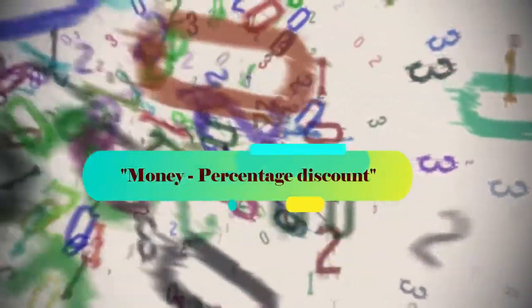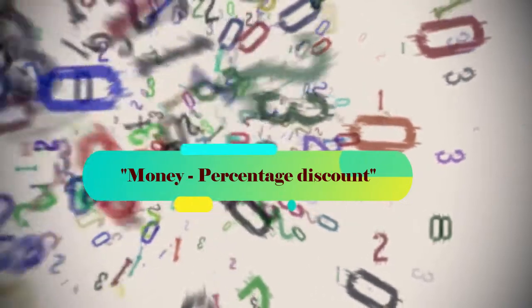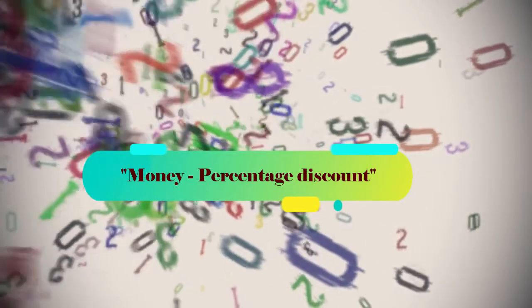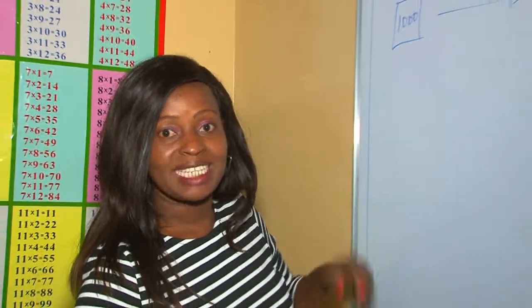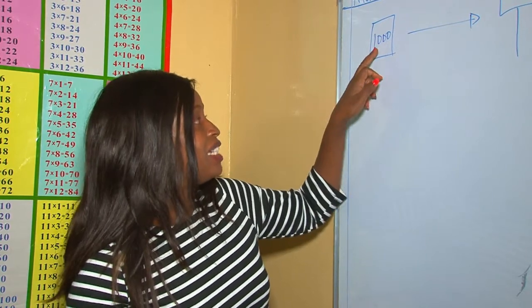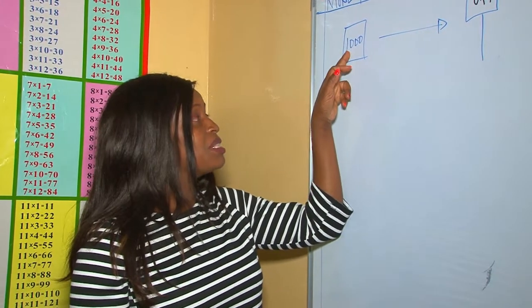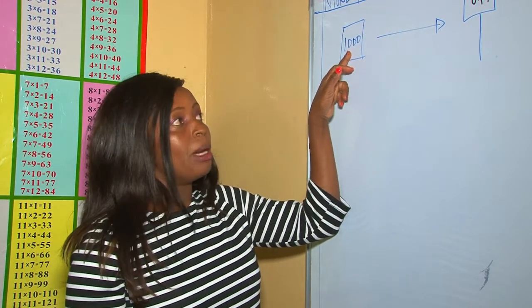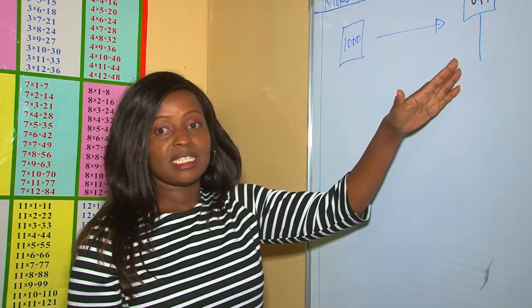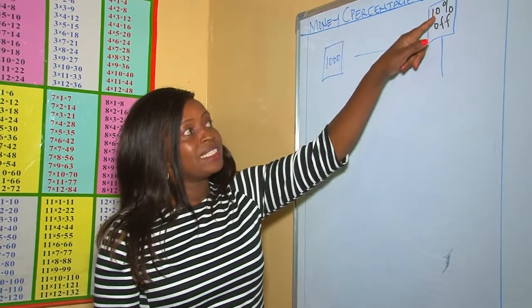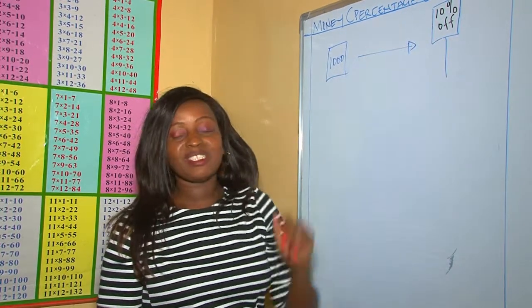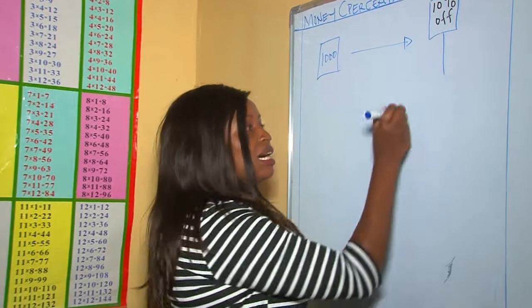Welcome to my YouTube channel. Today's lesson is about money, and the subtopic is percentage discount. Have you ever walked into a shop and found labels on items? For example, the price of an item is labeled 1000, but against it you see another label written '10% off.' This 10% off is what we call percentage discount.